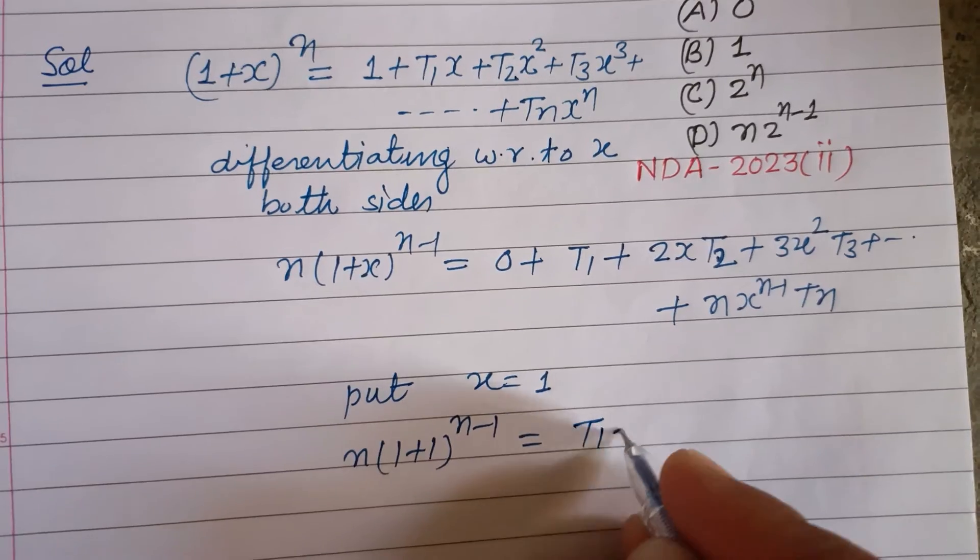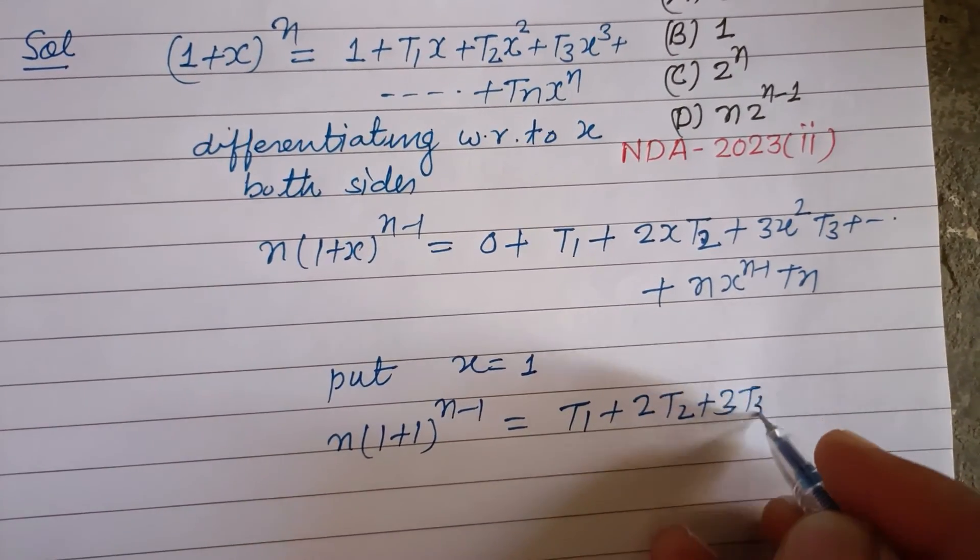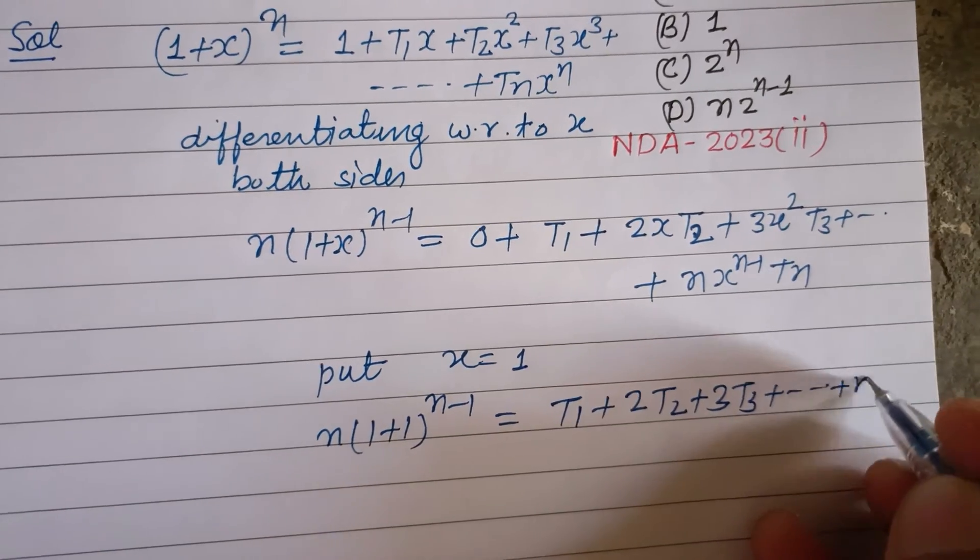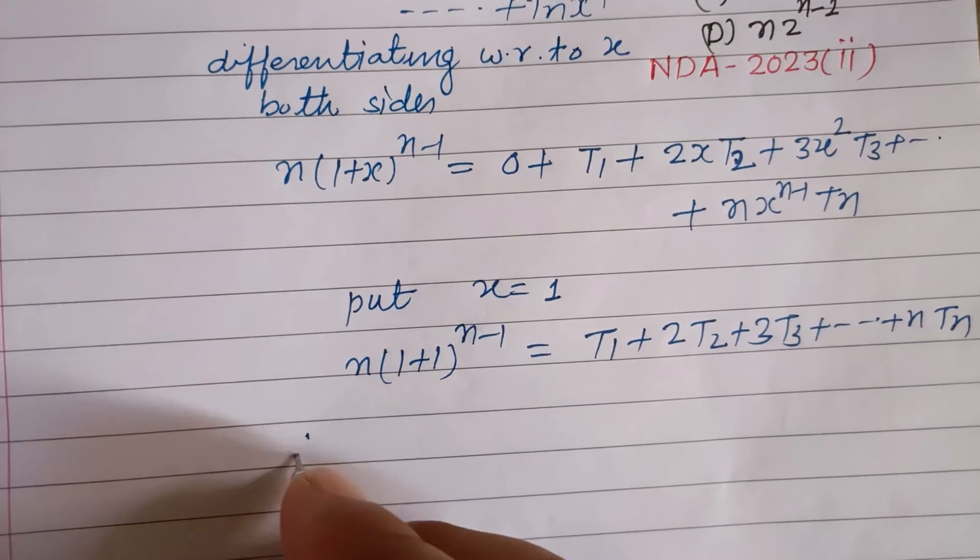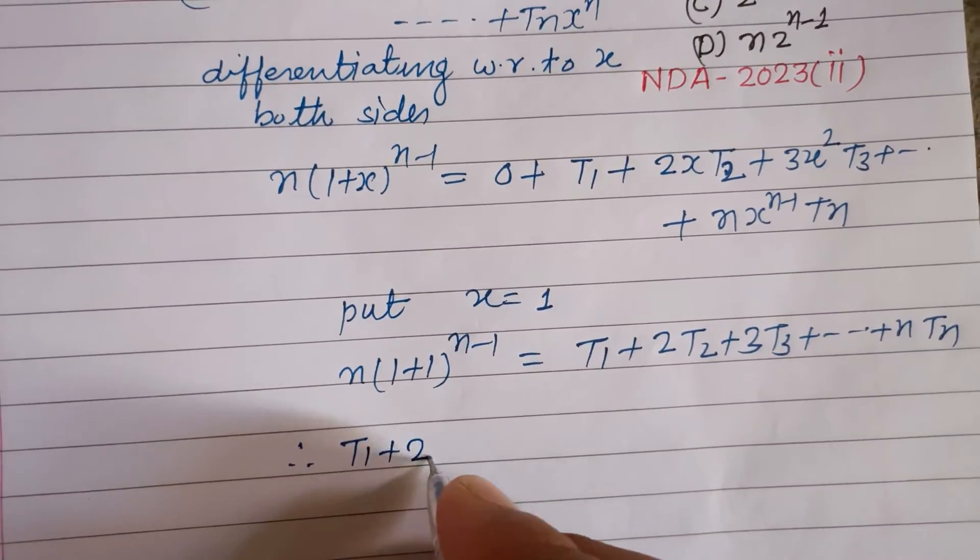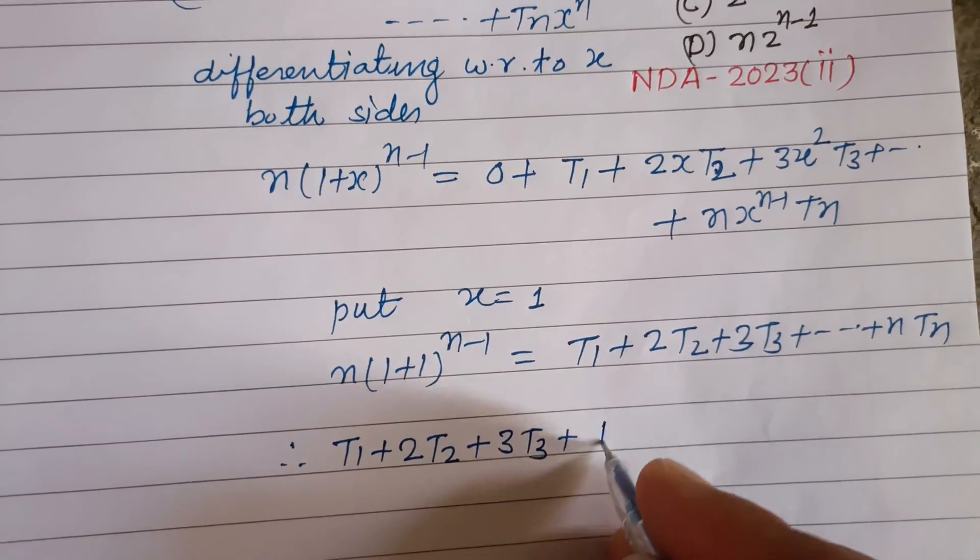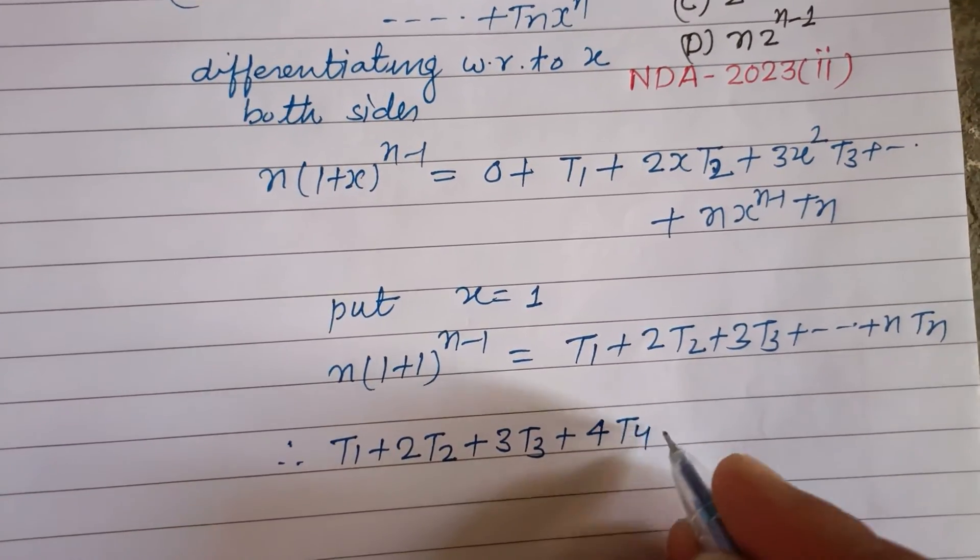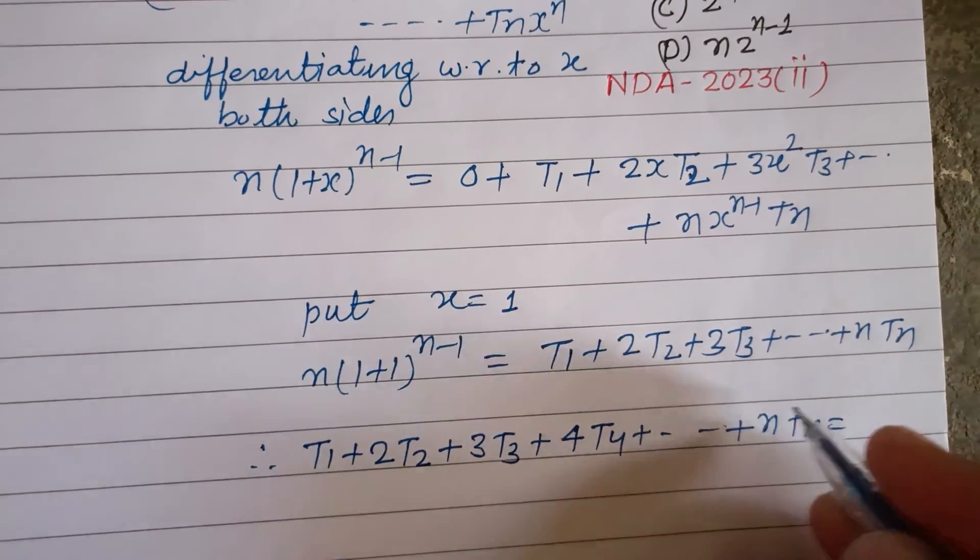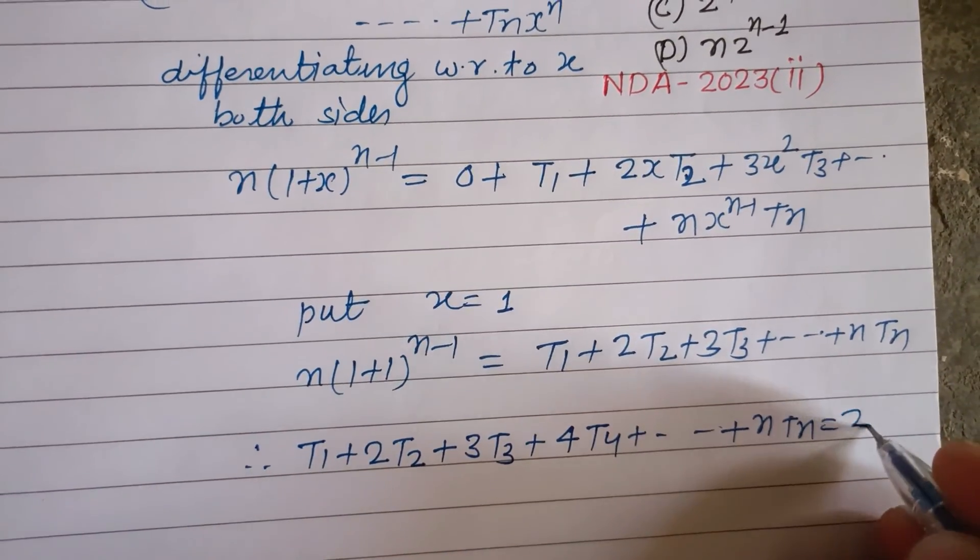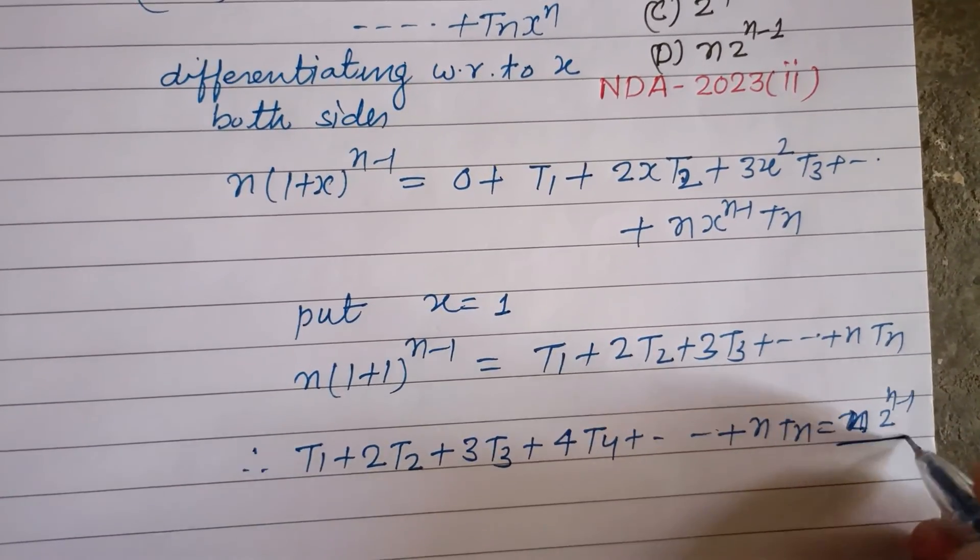This equals T₁ + 2T₂x + 3T₃x² + ... + nTₙx^(n-1). Setting x=1, we get n(1+1)^(n-1) = n·2^(n-1), which is the answer to this question.